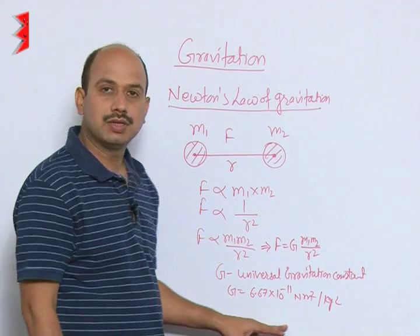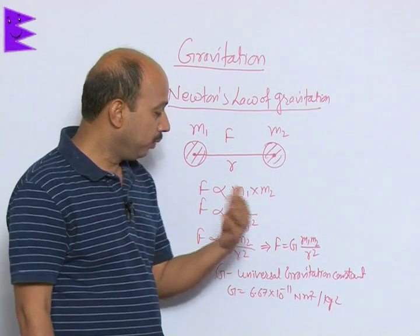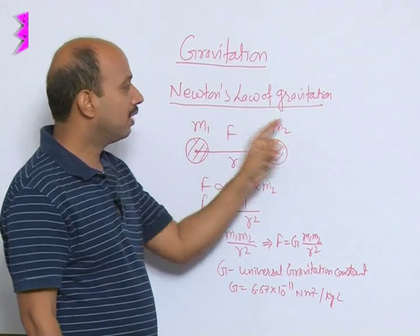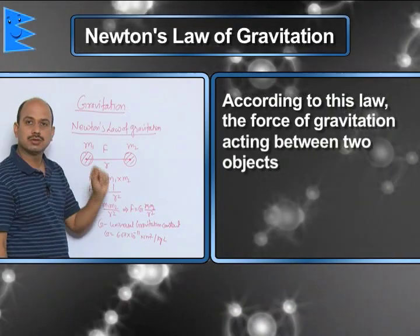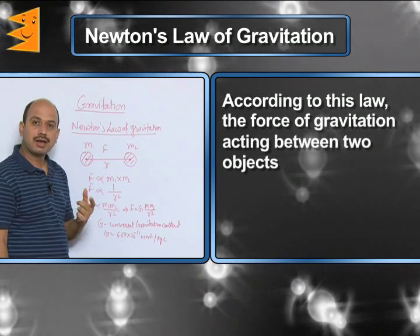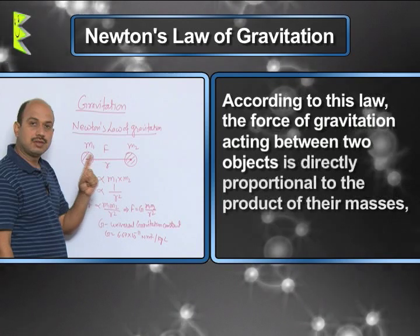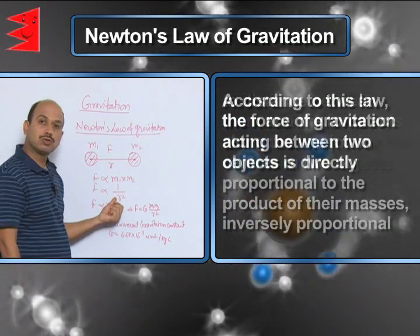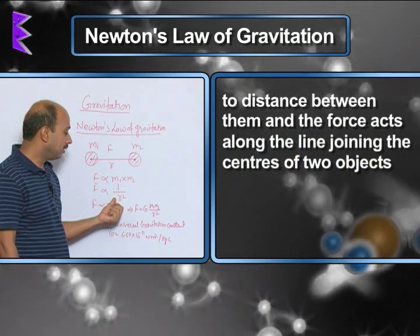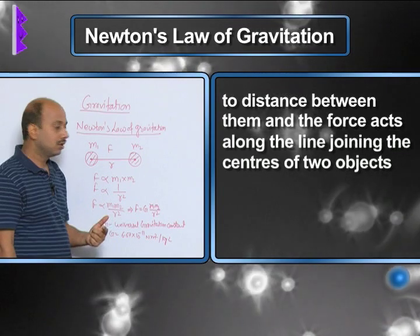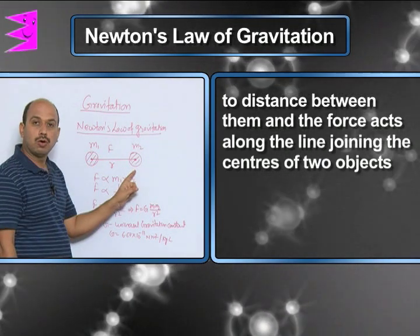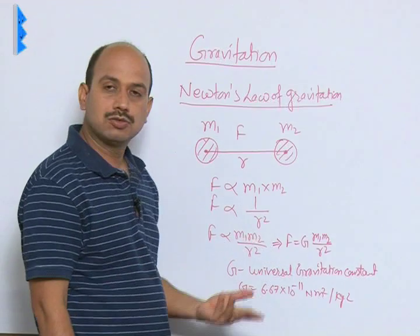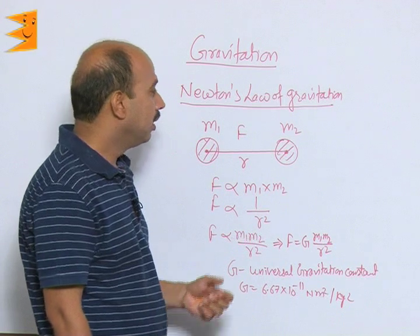Now I am going to state Newton's Law of Gravitation. According to Newton's Law of Gravitation, the force of gravitation acting between two objects is directly proportional to the product of their masses, inversely proportional to the square of the distance between them, and the force acts along the line joining the centers of the two objects or two bodies. Capital G is a universal constant.